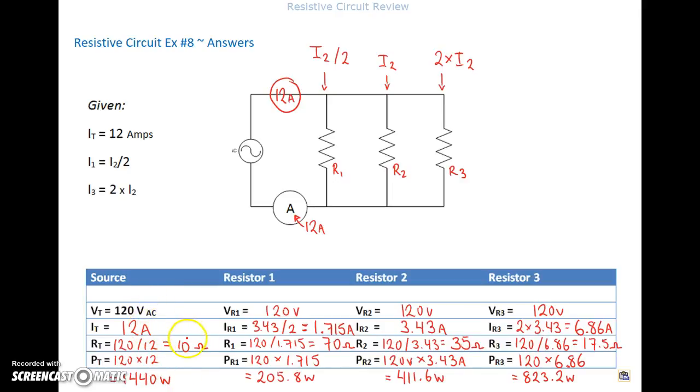And 120 divided by the 12 is going to give me the 10 ohms. So you can do the reciprocal equation with your 70 ohms, 35 and 17.5 to make sure you get 10 ohms for your total. And let's just double check all our values here for the power and see if they add to a value that's close to 1440. So 205.8 plus 411.6 plus 823.2 gives me a value of 1,440.6 watts. So all the voltages are the same, the current sum to give me 12 amps, and the power values sum to give me 1,440 watts.